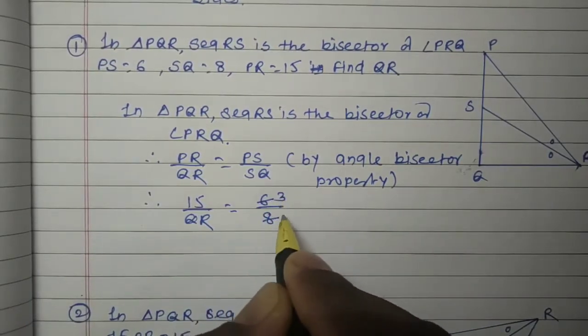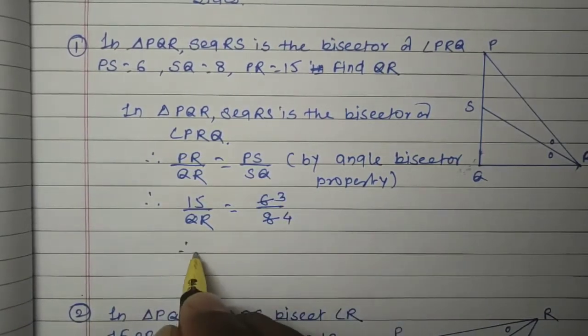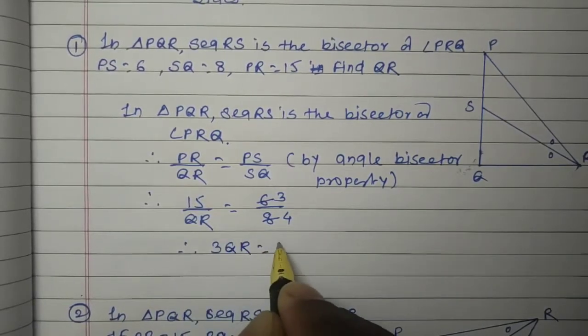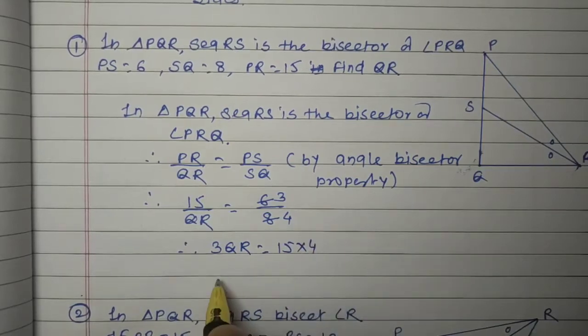Then simplify: 2 threes are 6, 2 fours are 8. So we get 15 upon QR equals 3 upon 4. Then cross multiplication: 3QR equals 15 into 4.